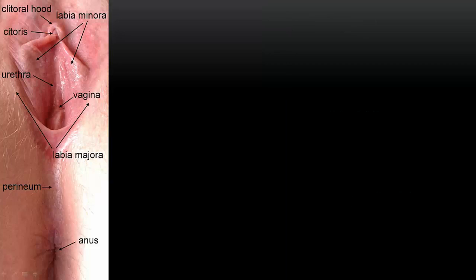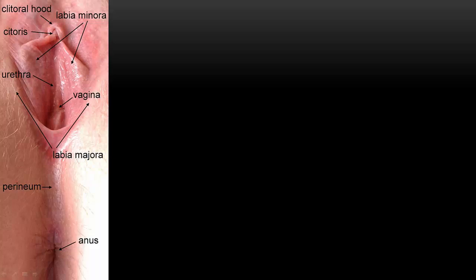Let's take a look at the external female genitalia. Here we see the clitoris and the clitoral hood, the labia minora and the labia majora. You can also see the urethra and the opening to the vagina, as well as the anus and the tissue in between the vagina and the anus — the perineum. The perineum is important in obstetrics because it can be torn during a vaginal delivery, may need to be repaired, and can be cut by a procedure called episiotomy, which would also require a repair.